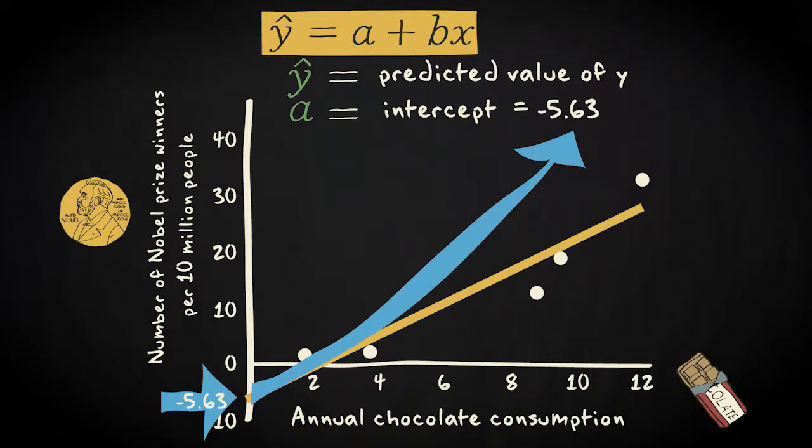Notice that this value has no substantive meaning. It is impossible to have minus 5.63 Nobel Prize winners per 10 million people. It only has a mathematical purpose, to describe the regression line.